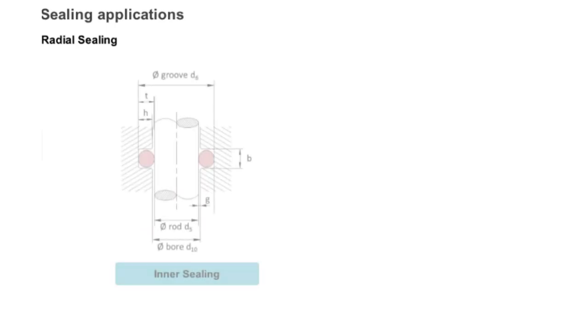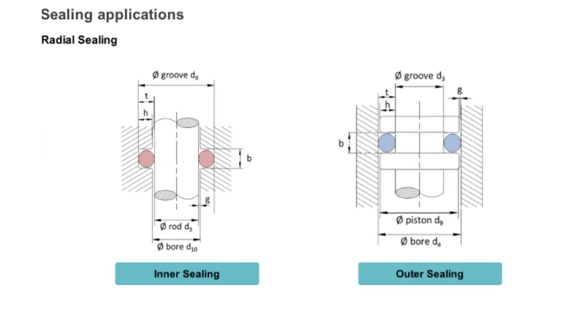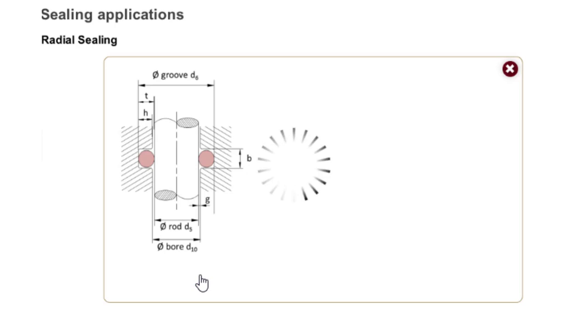For radial sealing applications, we distinguish between the inner and the outer sealing. If the O-ring is used as a rod seal, the O-ring is placed in a groove in the bore and the sealing surface is at the inside diameter of the O-ring.